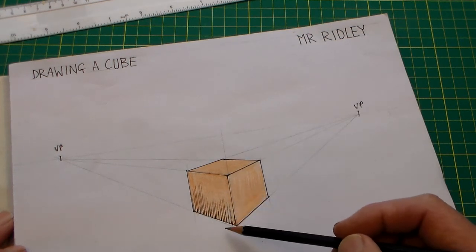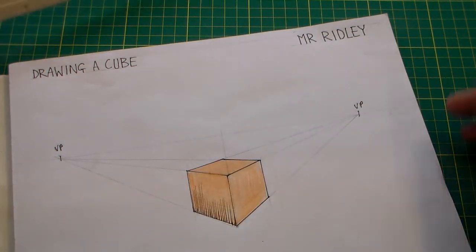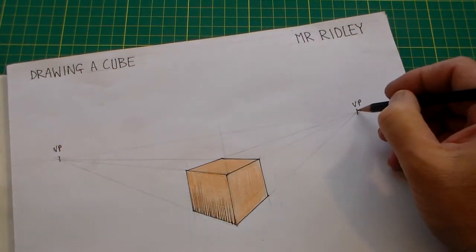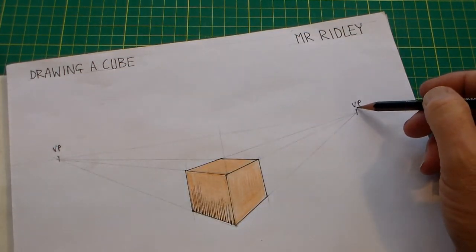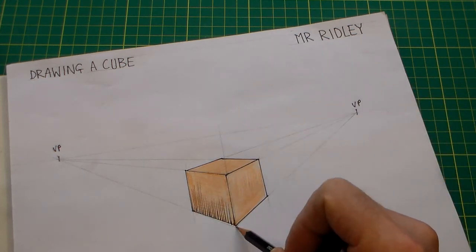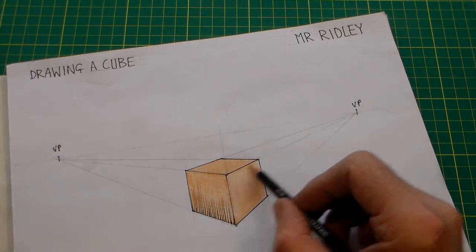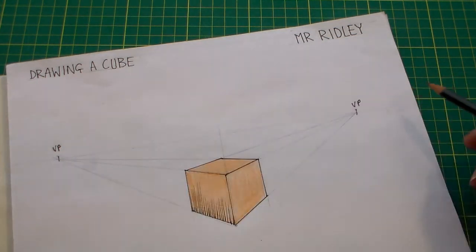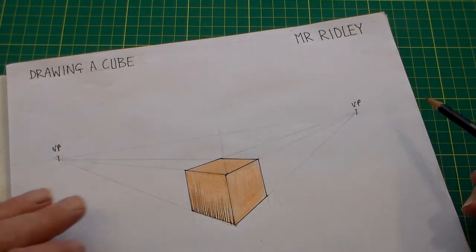We've got this cube here you can see that I've drawn, and we can see here a line along here which is a horizon. On that horizon I've marked two points, VP, which are vanishing points. That means that every line on this cube will move towards the vanishing point on that side and the vanishing point on this side. The two vanishing points are our two points, hence two-point perspective.